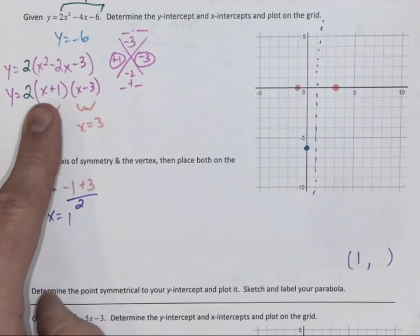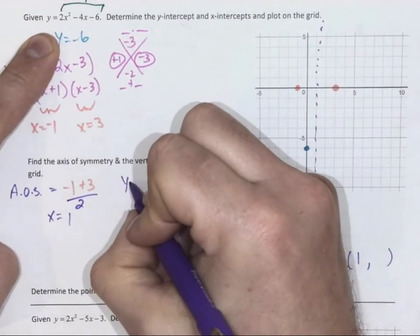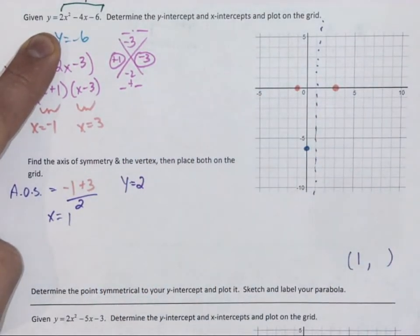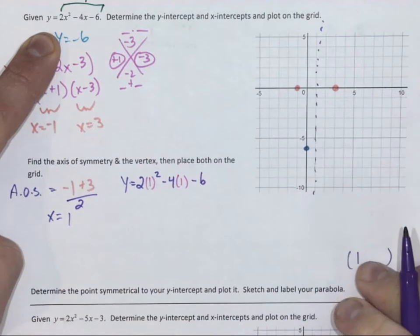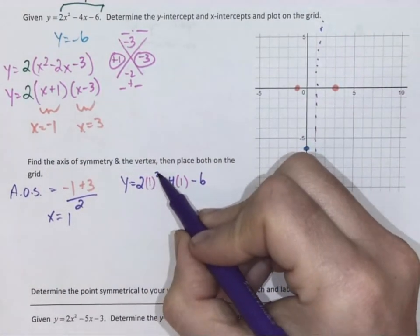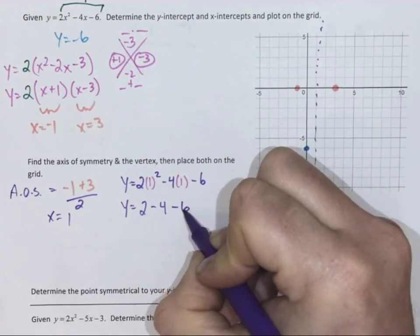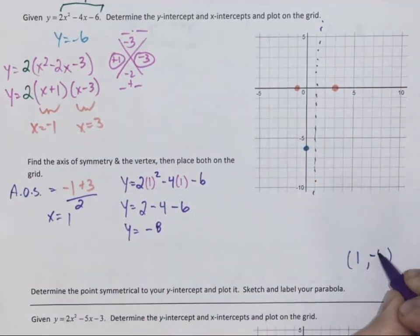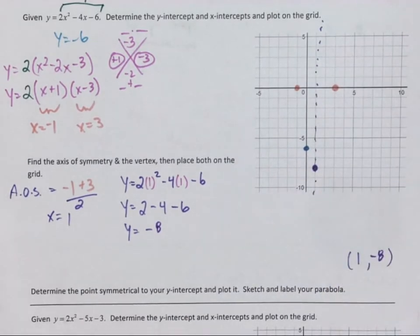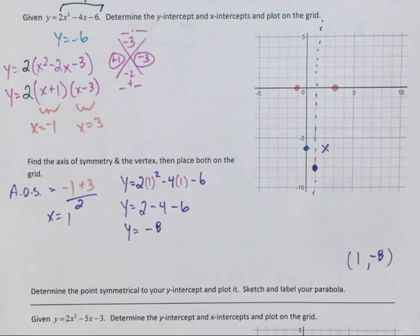I now take x equals 1 and I sub it into factored form or standard form to get what y is and we'll have our answer. If I sub it into standard form, that is fine. And I look at my order of operations. 1 squared is 1 times 2 is 2. Negative 4 times 1 is negative 4 minus 6. I can add all together, 2 take away 4 take away 6 is negative 8. I see that the matching point to my y-intercept 1 away from the axis of symmetry is there. Now I have enough to draw my parabola.